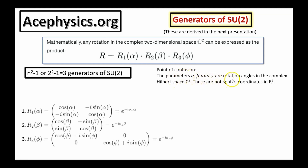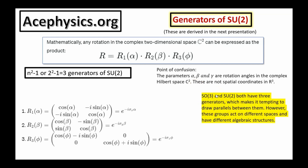The parameters alpha, beta, and gamma are rotation angles in the complex Hilbert space C2 — these are not angles in real space R3. SL3 and SU2 both have three generators, which makes it tempting to draw parallels between them. However, these groups act on different spaces and have different algebraic structures. For physics students, it's beneficial to study these three matrices and understand how they rotate two-dimensional complex numbers differently.